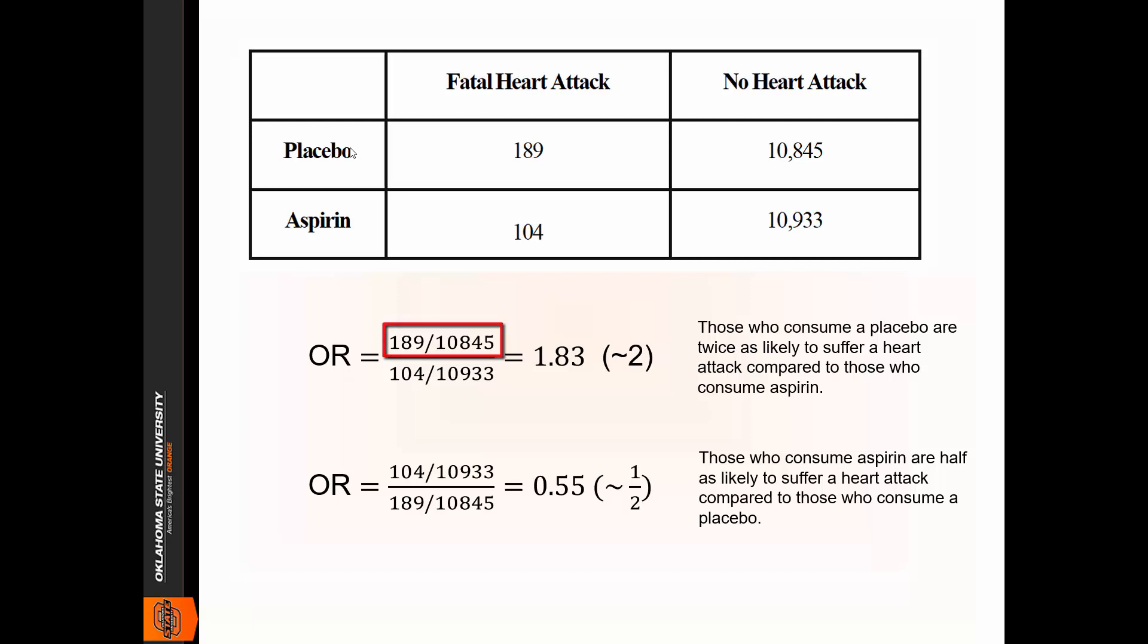Those who consume the placebo were, now we go to the odds ratio, twice as likely to, now we go to that numerator of the numerator, which is 189. So that's the heart attack column. Those who consume the placebo are twice as likely to suffer a fatal heart attack, and now we go to the last part, compared to those who consume the aspirin. Make sure you label everything and walk through it systematically, and you'll interpret it correctly.